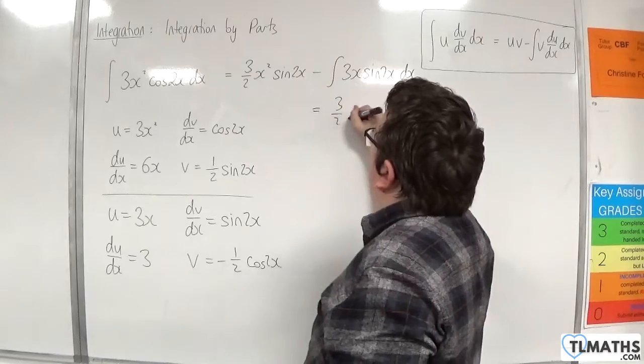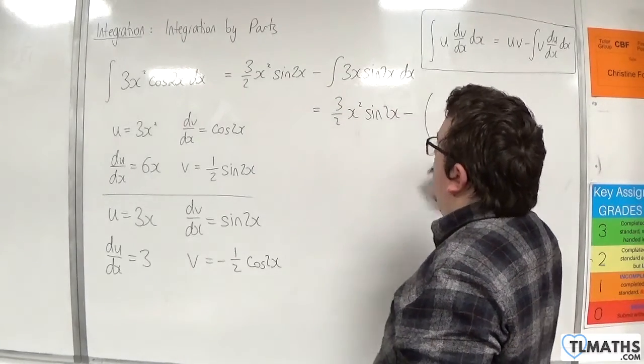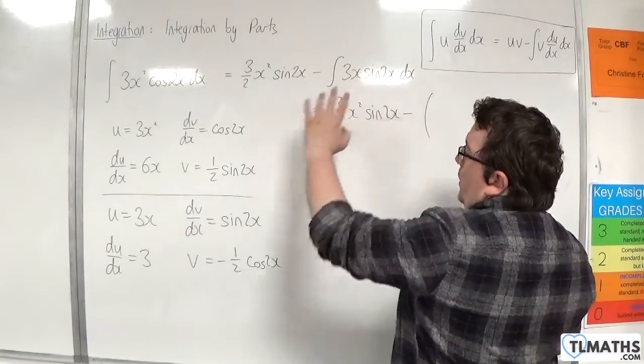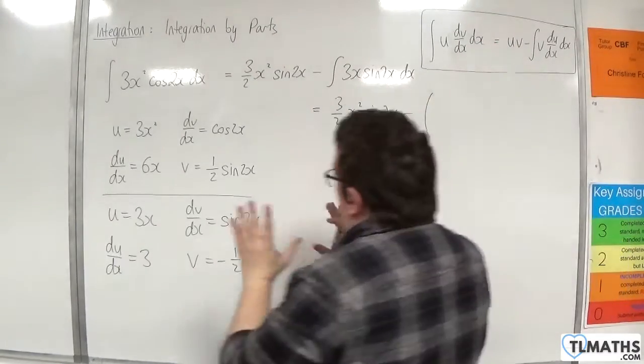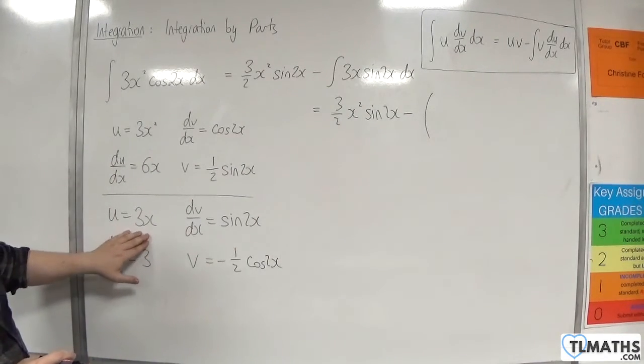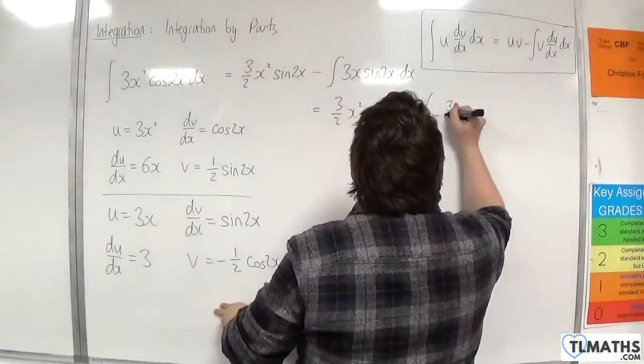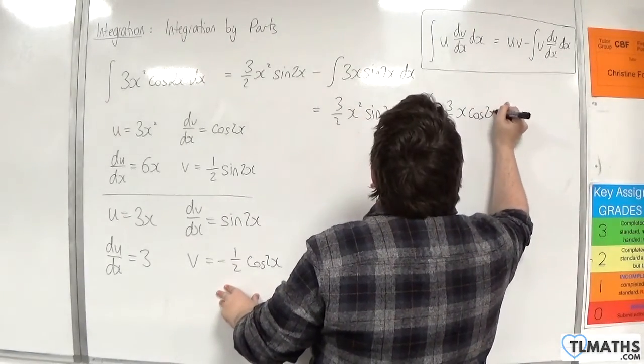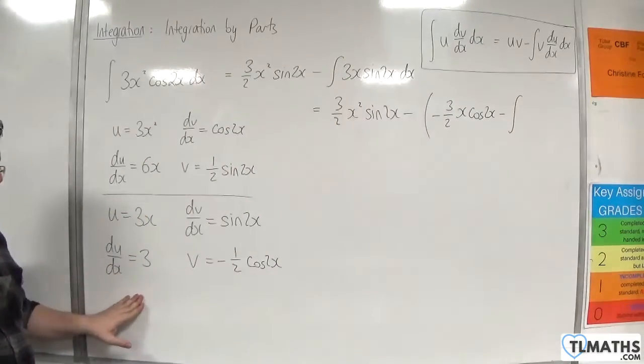So we have 3 halves x squared sine of 2x. Take away. Now I'm going to open up a large bracket here because what's going in here is that whole bit of the formula there. And I don't want to get the minus signs mixed up. So we have u times v. So minus 3 halves x cosine 2x. Take away the integral of v times du by dx.